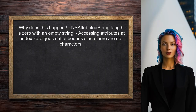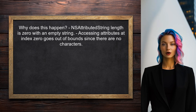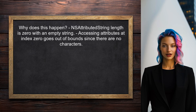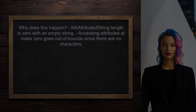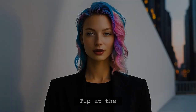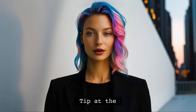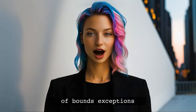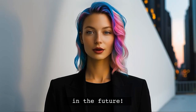Why does this happen? When you create an NSAttributedString with an empty string, its length is zero. So when you try to access attributes at index zero, you're actually going out-of-bounds, since there are no characters to reference. This is a classic case of trying to access something that doesn't exist. Stick around — I have a great tip at the end that will help you avoid this kind of exception in the future.